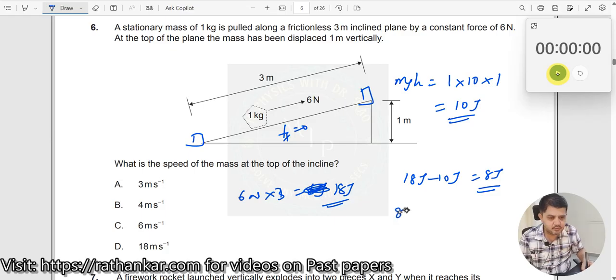Now, this 8 joules, where does it go? It goes in increasing the speed of the particle. Now, what we will do is, let us say this 8 joules is equal to a half mv square.